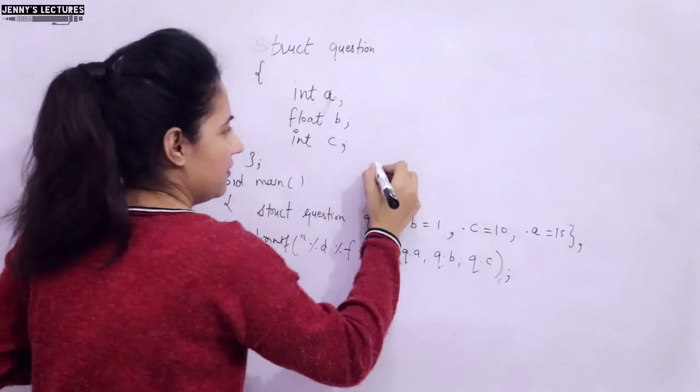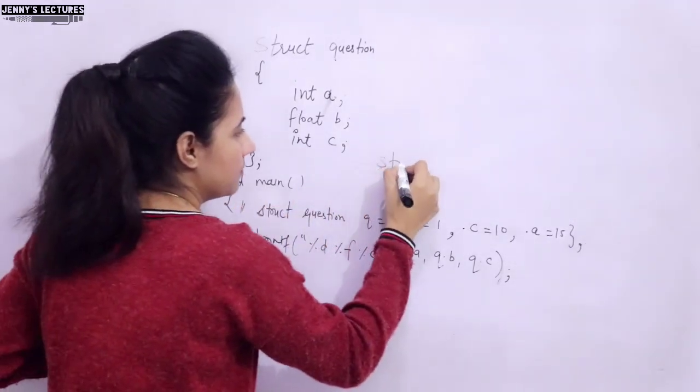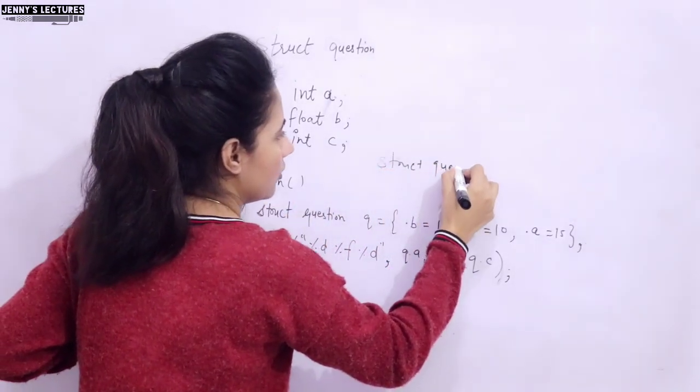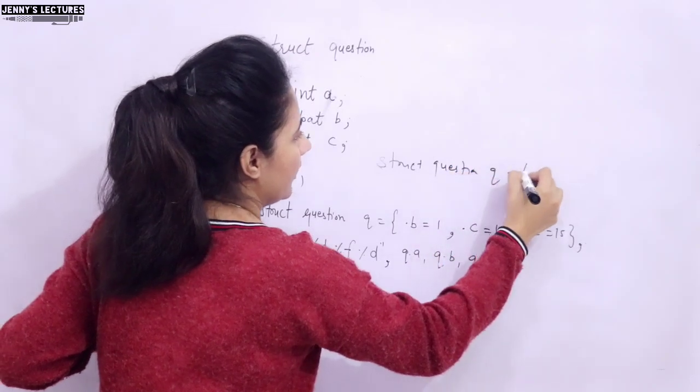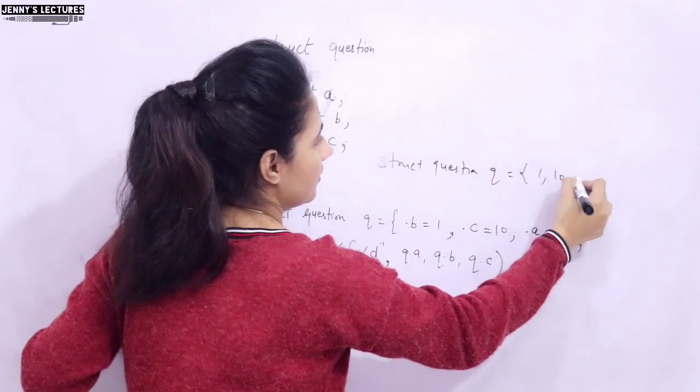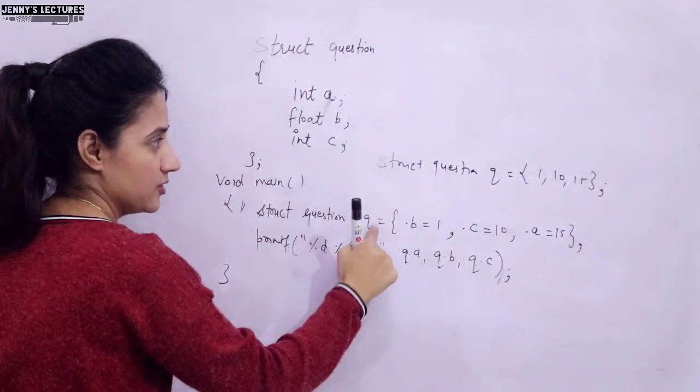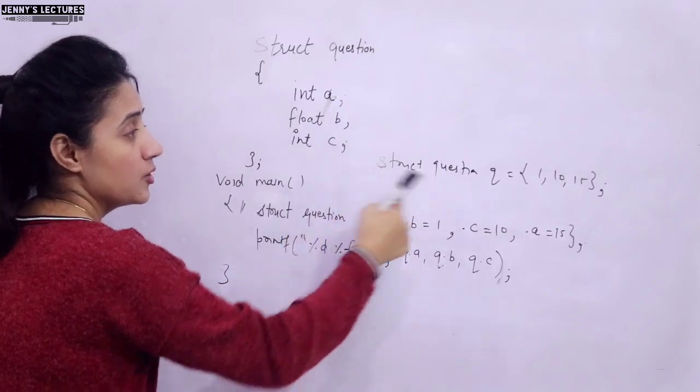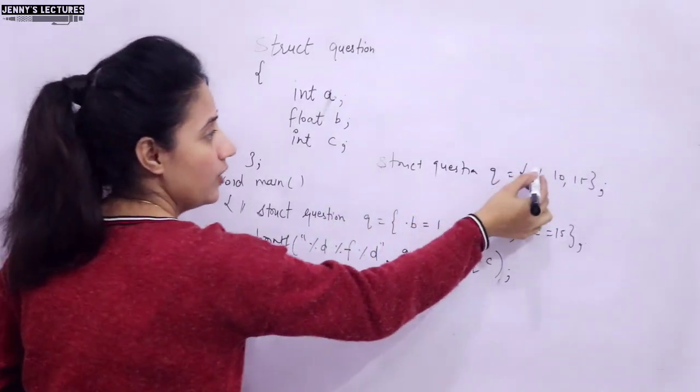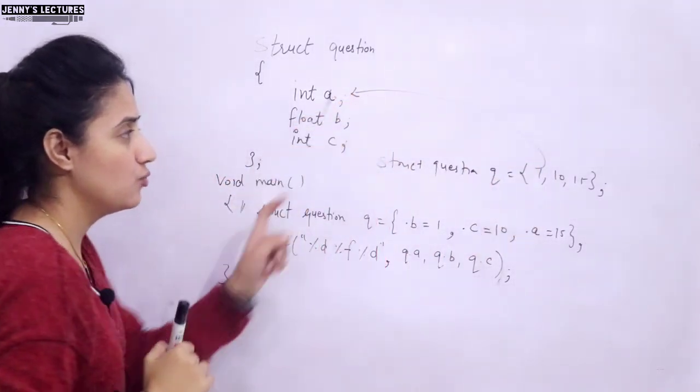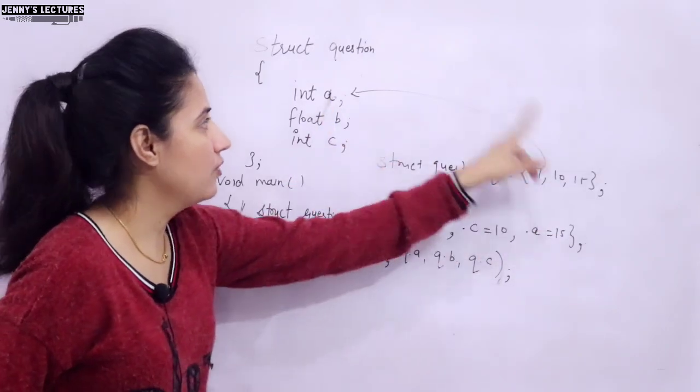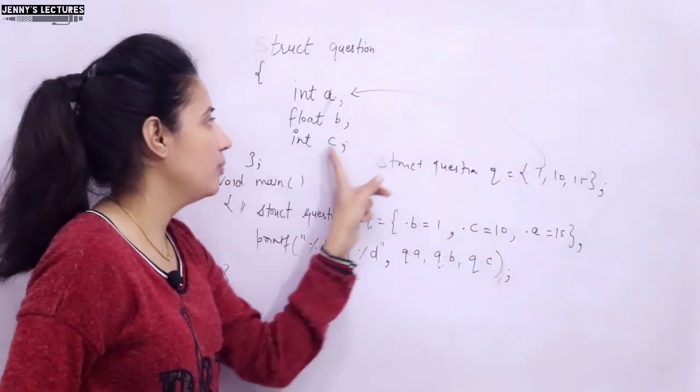See, if you initialize something like this, rather than this line, I am writing struct question q and here I am writing 1, 10, 15. Right. I hope you can see the difference. One is this initialization, one is this. So in this case, what output you will get? This 1 would be initialized. 1 would be given to this A. This 10 would be in this B and this 15 would be in this C.